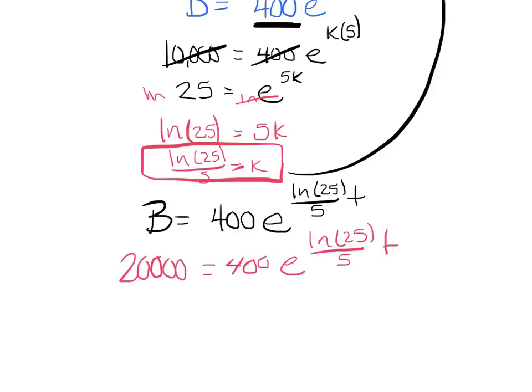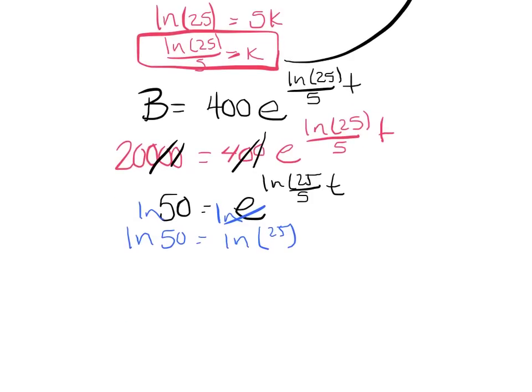Divide out that 400 again. So that gives me 50 equals e^(ln(25)/5 times t). I'm going to ln both sides to kill that e. And I've got ln(25) divided by 5 times t. And then to solve for t, I'm simply going to multiply by the reciprocal. And I get approximately 6.1 hours.